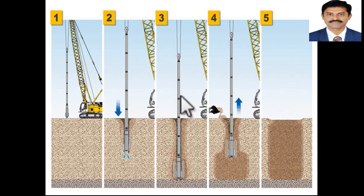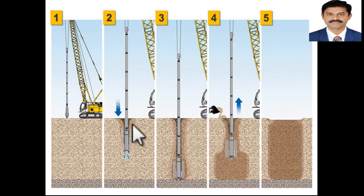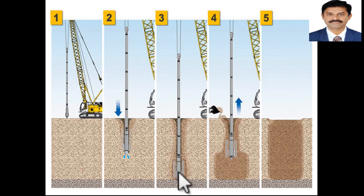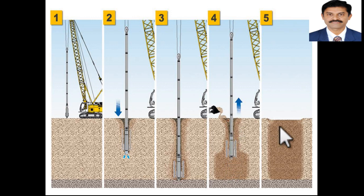This schematic shows the different steps involved in Vibroreplacement. Initially the probe is vibrated into the soil, the surrounding soil is displaced using water, then it is compacted, then granular material is poured in. When it is compacted, the probe is withdrawn and the column is formed.